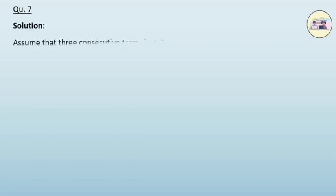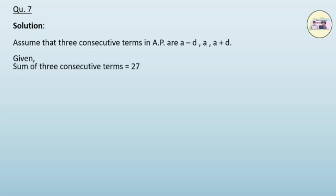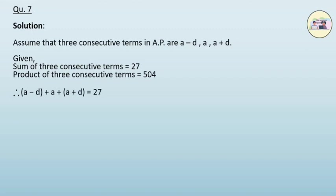Question 7. In an AP, let the three consecutive terms be a−d, a, and a+d. It is given that the sum of three consecutive terms is 27 and the product is 504. Therefore, (a−d) + a + (a+d) = 27. After solving, we get 3a = 27, therefore a = 9.